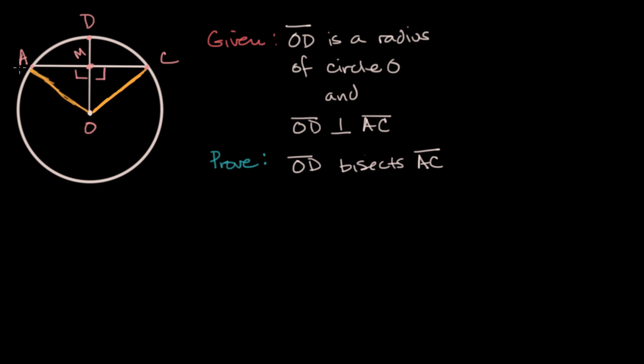Now we know that the length AO is equal to OC because AO and OC are both radii. In a circle, the length of the radius does not change.